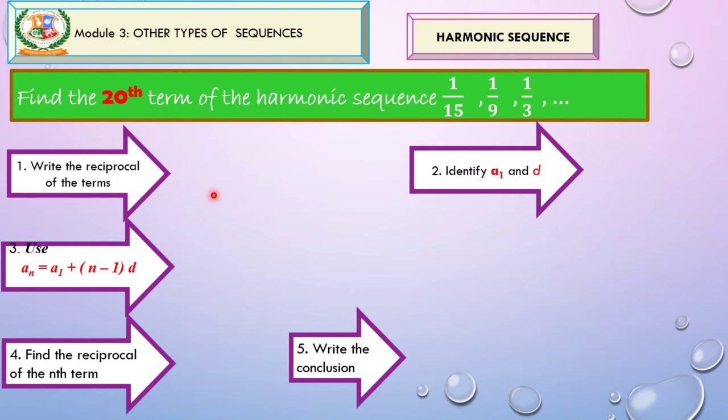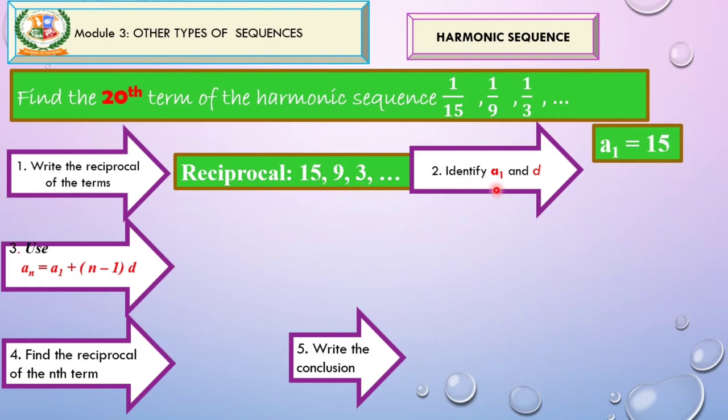So let us now find the 20th term of the harmonic sequence. 1 over 15, 1 over 9, and 1 third. This is an infinite sequence. So as you can see, we have an ellipsis in there using these 5 steps. So first, what do you think are the reciprocals of the terms? Very good. That's 15, 9, and 3. The next, identify A sub 1 and D. What's A sub 1? A sub 1 is our first term. D is the common difference. So what's our first term? This is the first term. That's 15. How do you get D or the common difference? That's 9 minus 15. So what's that? 9 minus 15 is negative 6. 3 minus 9 is negative 6. Alright. A sub 1 is 15. The common difference is negative 6.